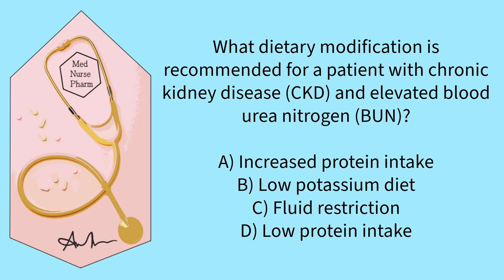What dietary modification is recommended for a patient with chronic kidney disease and elevated blood urea nitrogen? Options: increased protein intake, low potassium diet, fluid restriction, or low protein intake.